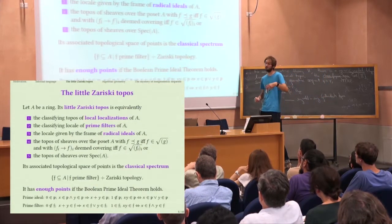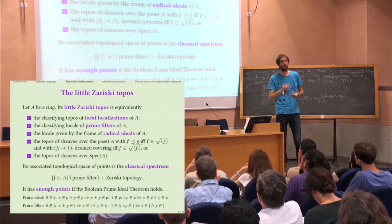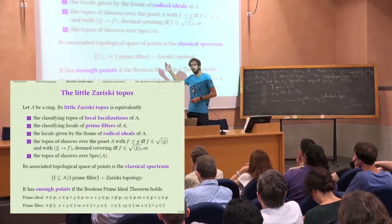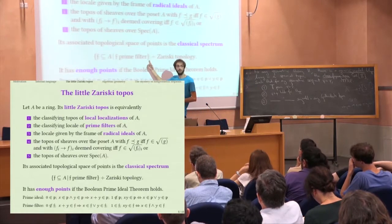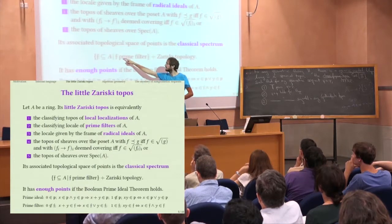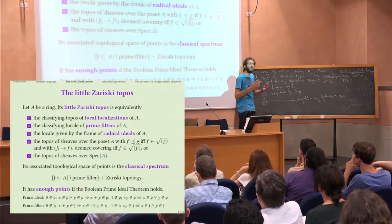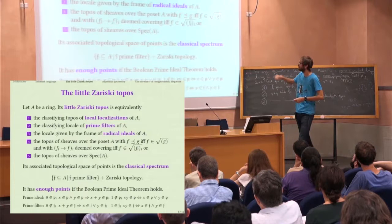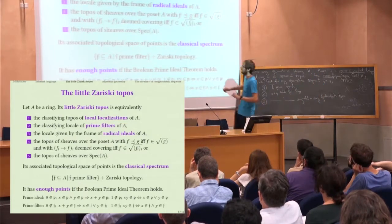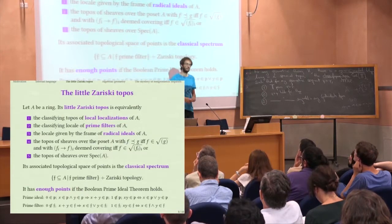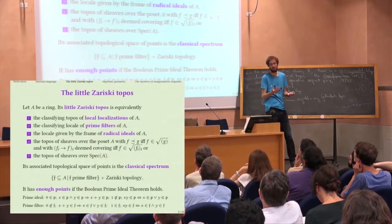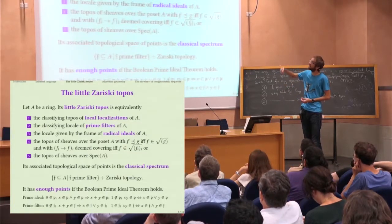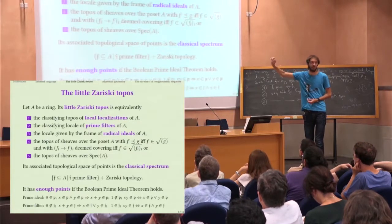Also notice that classically the spectrum consists of all the prime ideals and prime filters are in bijection via taking complements, but the prime filter definition is better. One word regarding the fifth definition: it's only okay if you are working in a classical metatheory and define the spectrum in any way you wish, or if you're working in a constructive metatheory but then you have to define the spectrum in a sensible way — for instance in any of ways one to four — such that statement number five becomes a tautology.